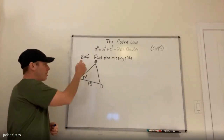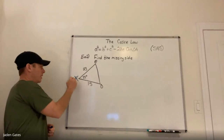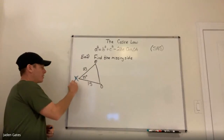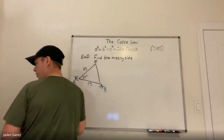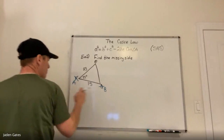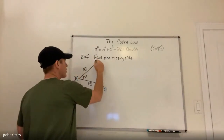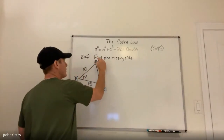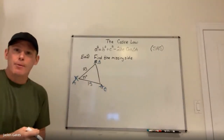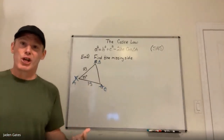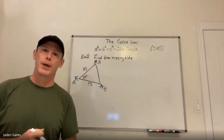Instead of calling this triangle D, E, F, I'm going to relabel it with A, B, and C. I just relabeled my triangle — it doesn't change the triangle, it just makes it easier for me to use the formula. Because I put A there, that means that's side A.